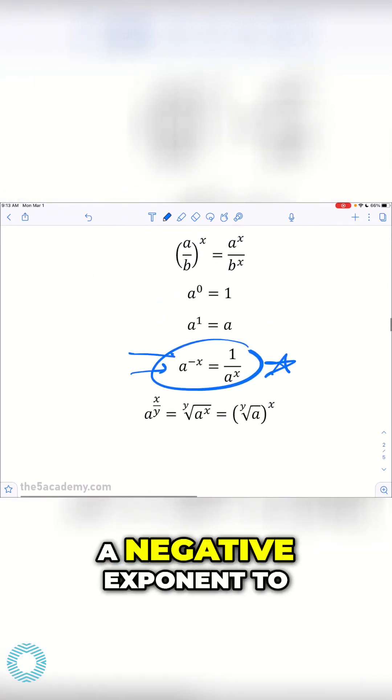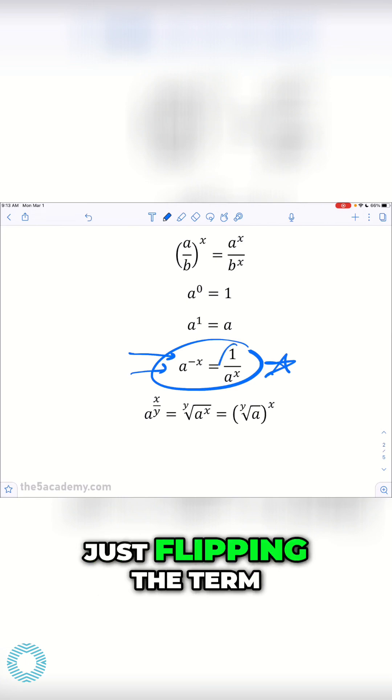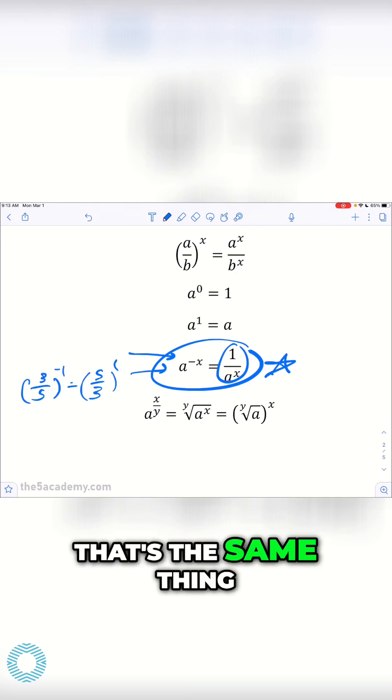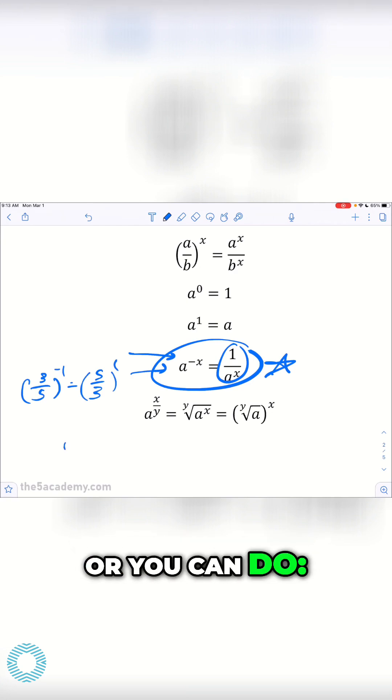But the point here is you can convert a negative exponent to a positive exponent by just flipping the term. So 3 over 5 to the negative 1 is the same thing as 5 over 3 to the 1. Okay, that's the same thing actually. Or you can do 1 over 3 to the 5th is equal to 3 to the negative 5.